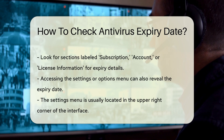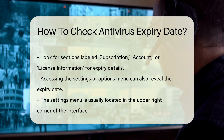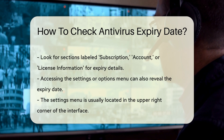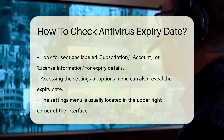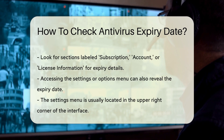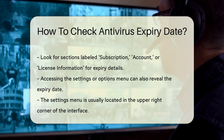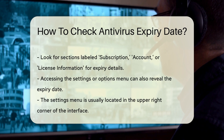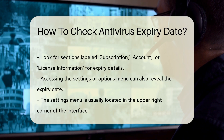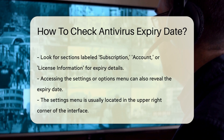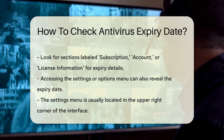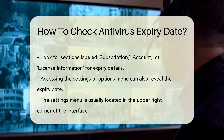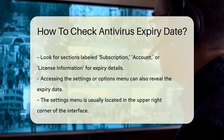For many antivirus solutions, you can also access this information through the Settings or Options menu. This is often located in the upper right corner of the interface. Once you open the settings, navigate to the About or License tab.